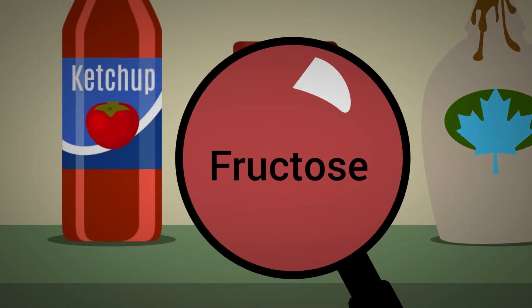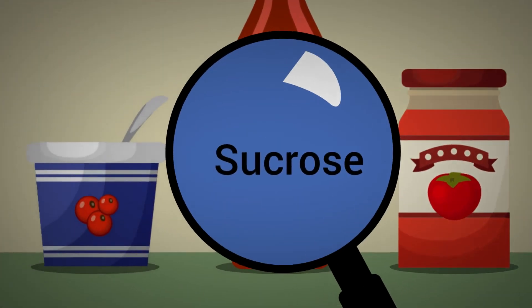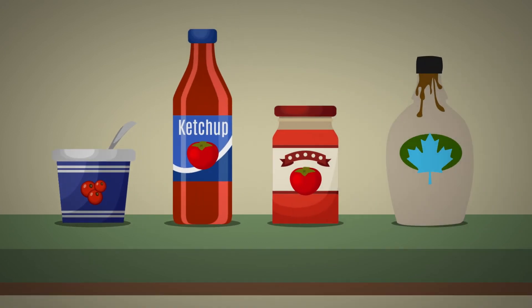They're disguised under other names like fructose, sucrose, and agave. Ketchup, pasta sauce, even low-fat yogurt are surprisingly high in sugar.